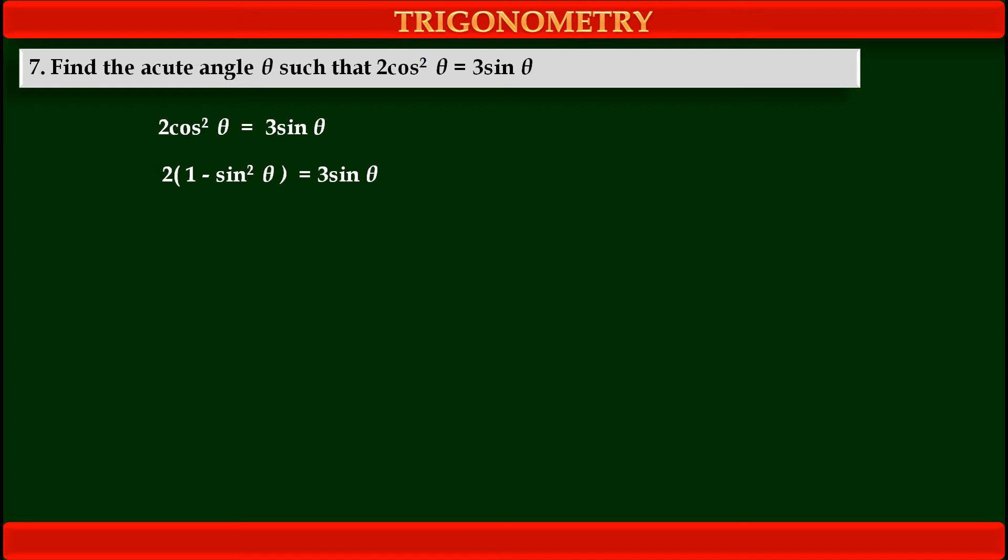Now, this equation has only one variable sinθ. Now, first we have to simplify it. Following the bracket, we get 2 - 2sin²θ - 3sinθ. Shifting this term from right side to left side. Now, rearranging term in proper form, we get 2sin²θ + 3sinθ - 2 = 0.